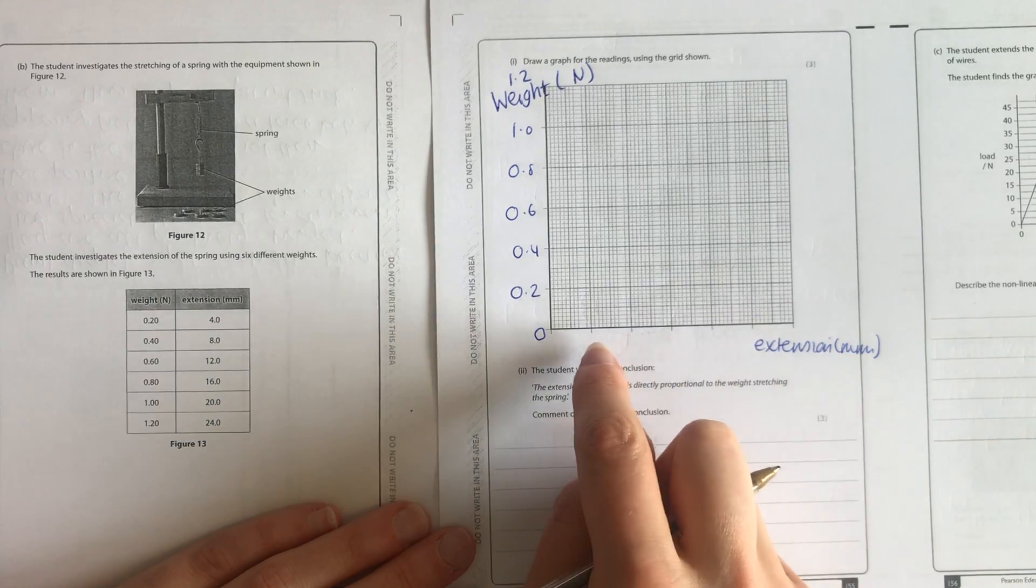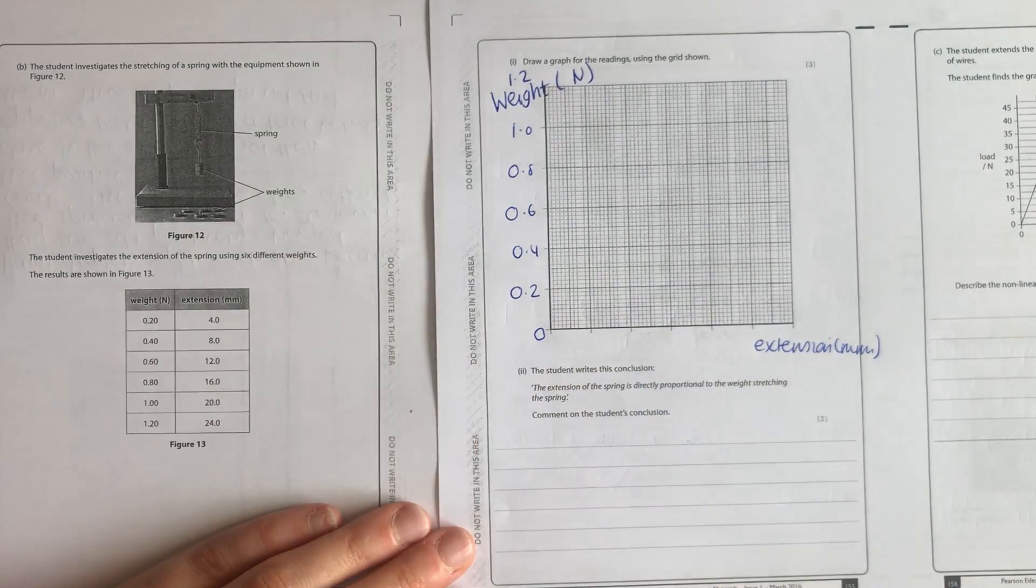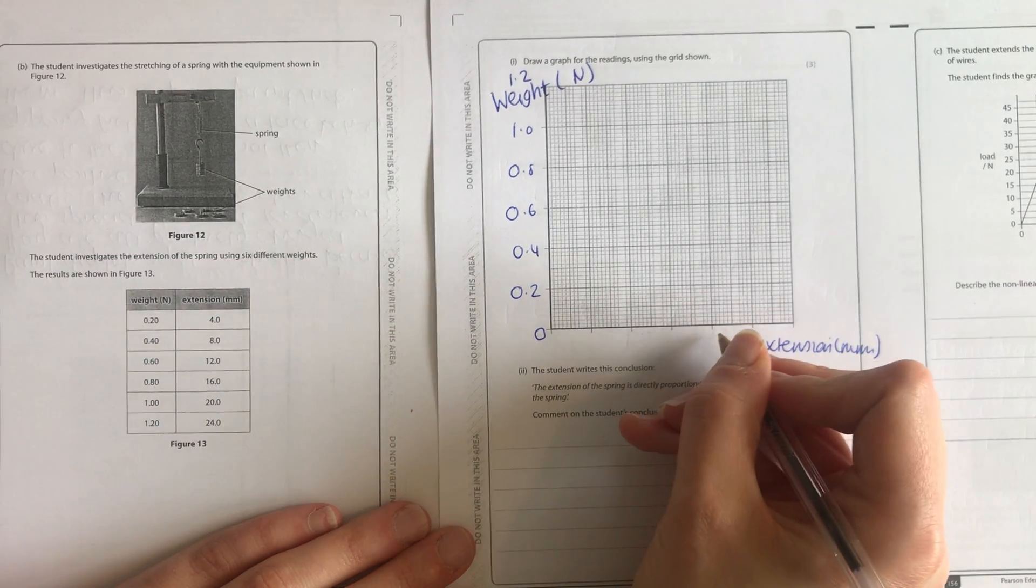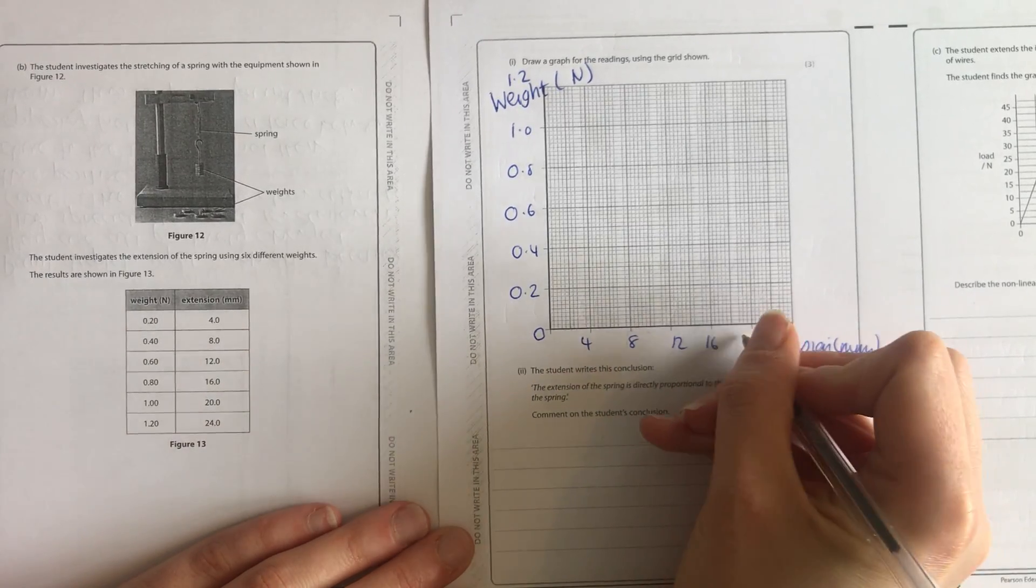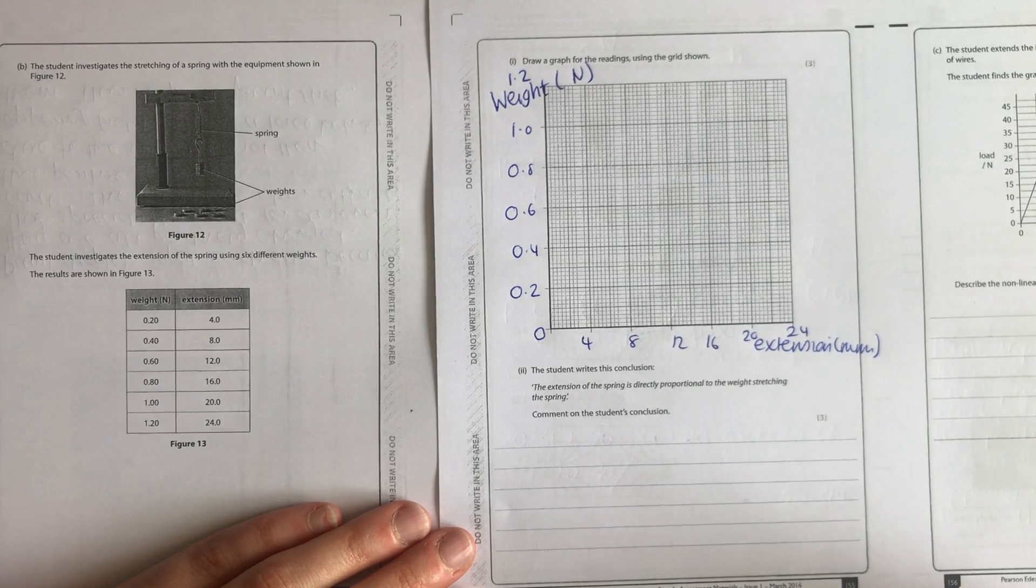And then the extension goes up to 24. So I've got 1, 2, 3, 4, 5, 6. 24 divided by 6 is 4. So 4, 8, 12, 16, 20, that works. So 4, 8, 12, 16, 20, 24. I've got my axes labels, and I need to plot this graph.